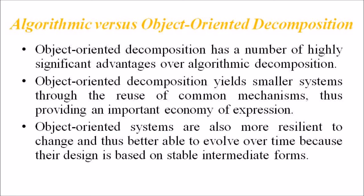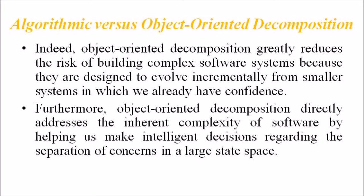Object-oriented decomposition has a number of highly significant advantages over algorithmic decomposition. It yields smaller systems through the reuse of common mechanisms, providing an important economy of expression. Object-oriented systems are also more resilient to change and better able to evolve over time because their design is based on stable intermediate forms. Object-oriented decomposition greatly reduces the risks of building complex software systems because they are designed to evolve incrementally from smaller systems in which we already have confidence. Furthermore, it directly addresses inherent complexity by helping us make intelligent decisions regarding the separation of concerns across a larger state space.